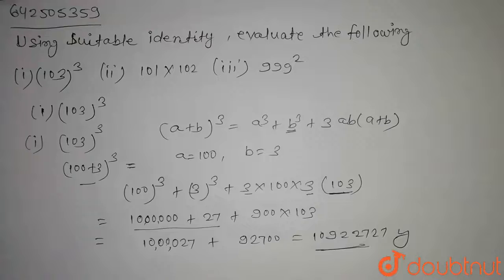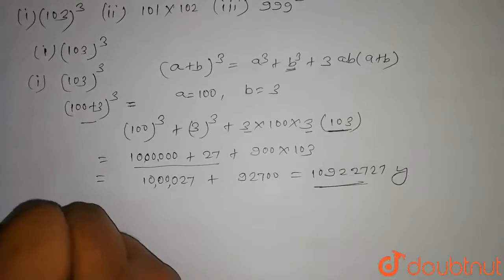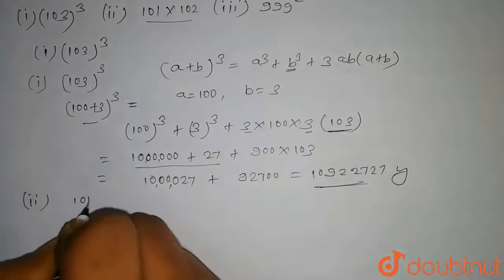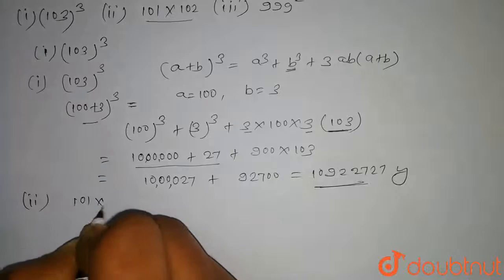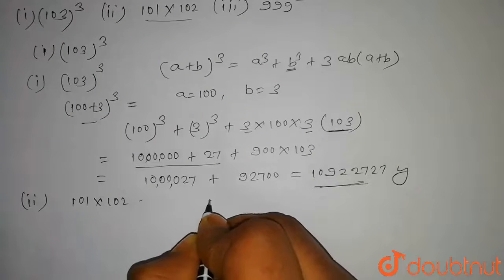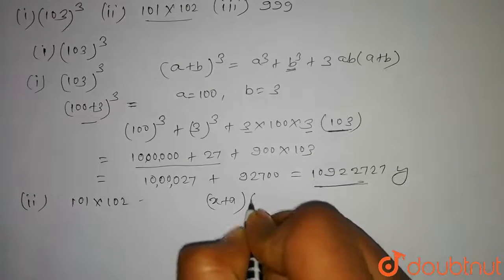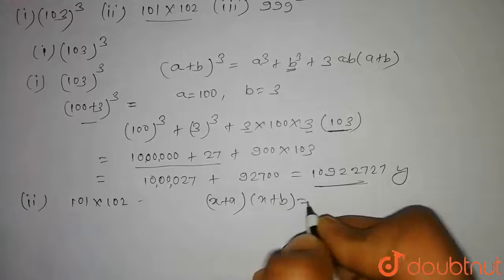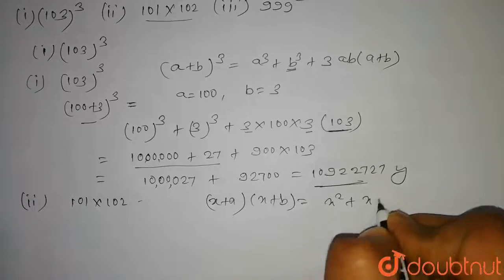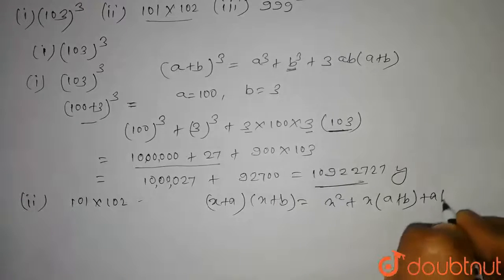Now we have to solve the second part of the question. Here we have to evaluate 101 × 102. We will use the identity: (x + a)(x + b) = x² + x(a + b) + ab.